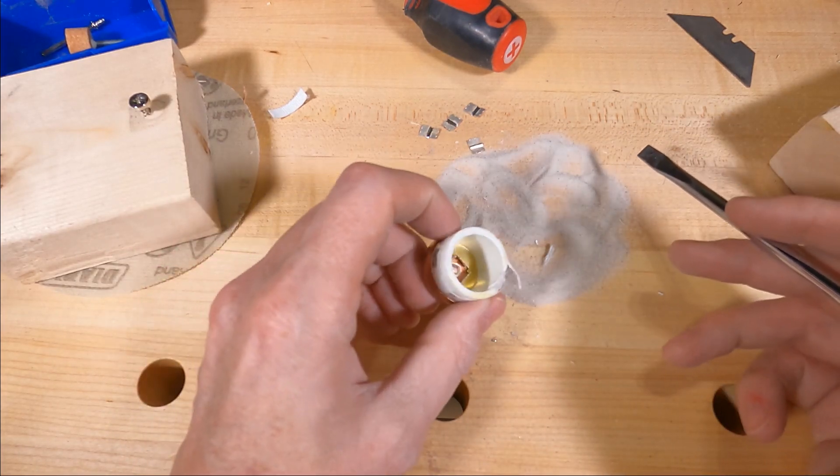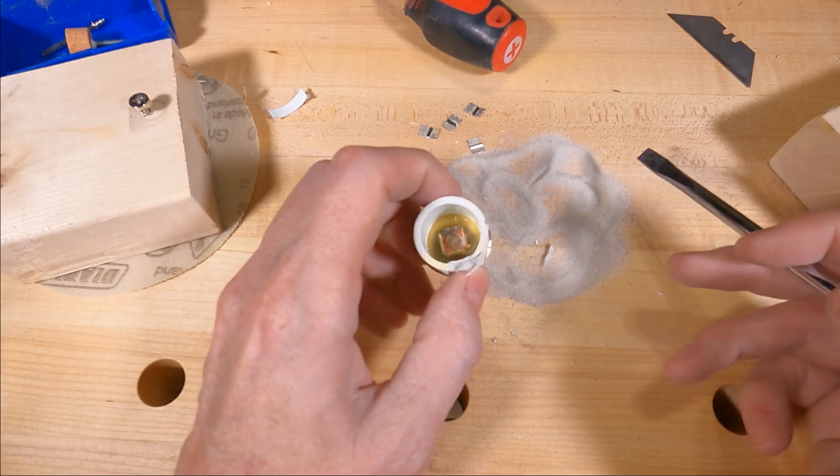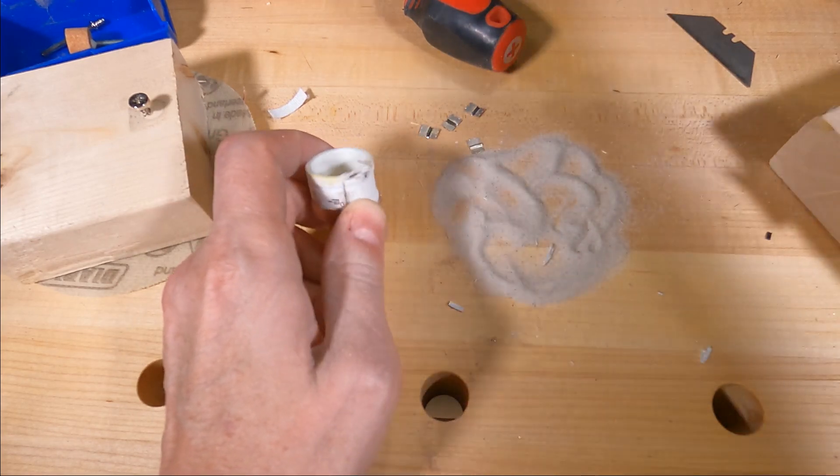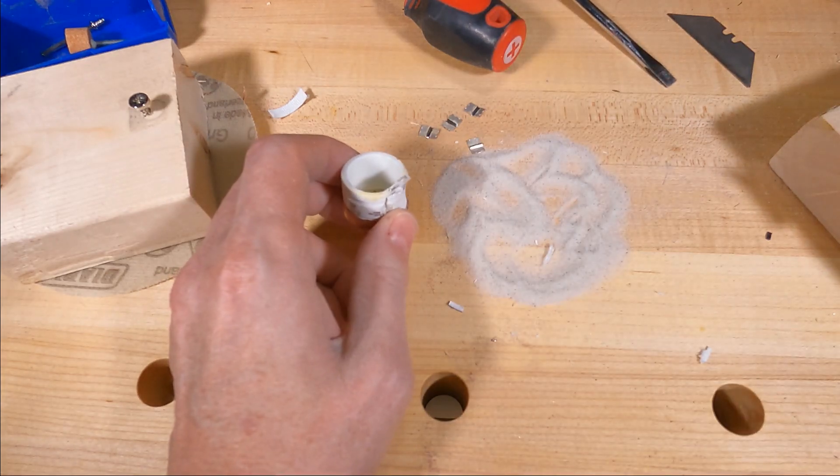Anyway, there you go. That's what's inside of a blown T-class fuse, and that's the silica sand that quenches the arc. Cheers.